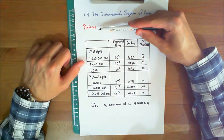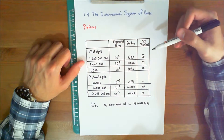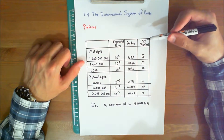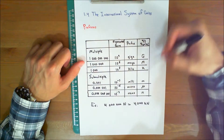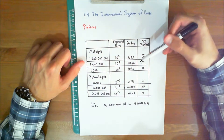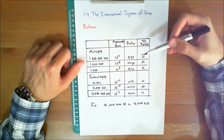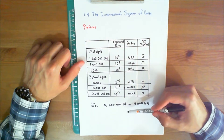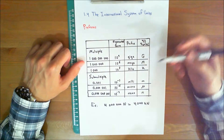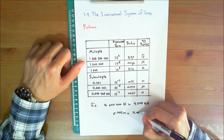We begin with prefixes. When a numerical quantity is either very large or very small, the units used to define its size may be modified by using a prefix. Some of the prefixes used in the SI system are shown in this table. Each represents a multiple or submultiple of a unit, which if applied successively moves the decimal point of a numerical quantity to every third place. For example, 4 million newtons is equal to 4000 kilonewtons, or 0.005 meters is equal to 5 millimeters.